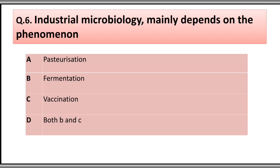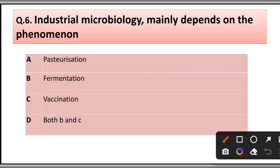Question number six: Industrial microbiology mainly depends on the phenomena of: A) pasteurization, B) fermentation, C) vaccination, D) both B and C. The correct answer is option B, fermentation.